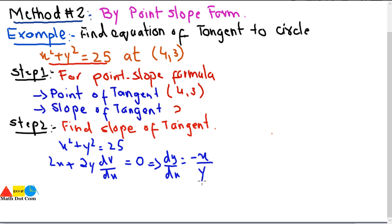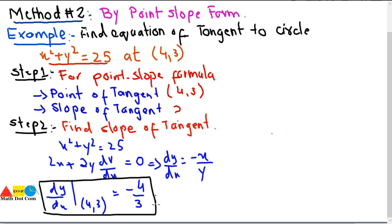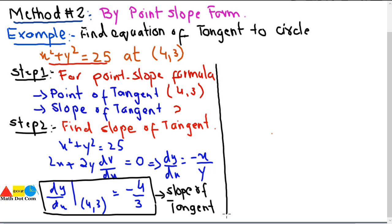To find the slope of the tangent, we put the values of x and y. So dy/dx at x = 4 and y = 3 gives us -4/3. This is the slope of the tangent at point (4, 3). So now we have the two things we actually need, and we move towards step number three.